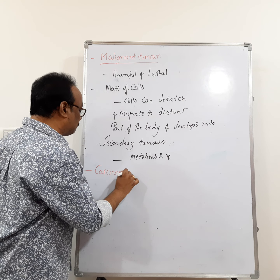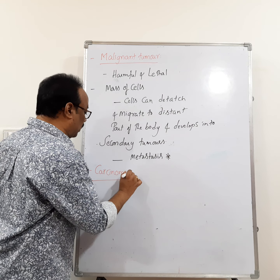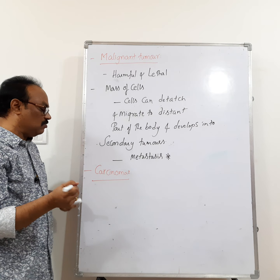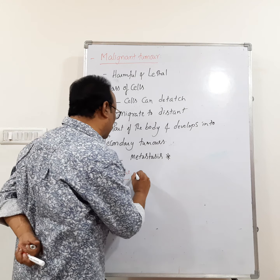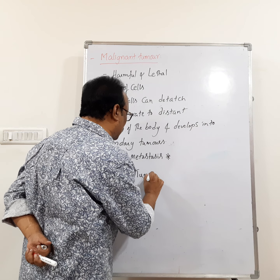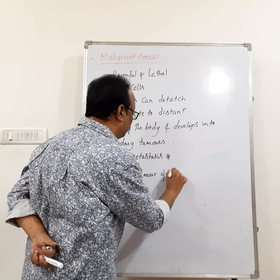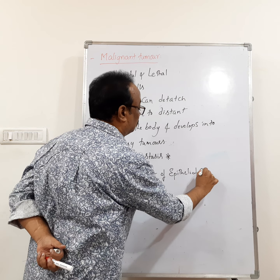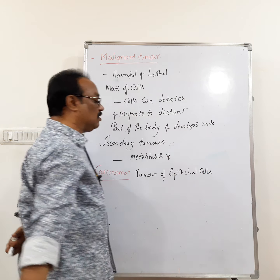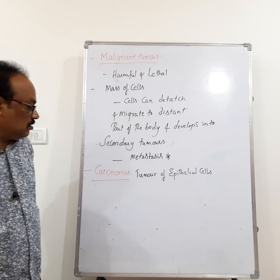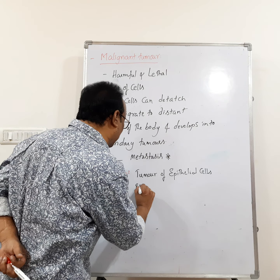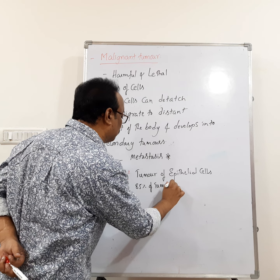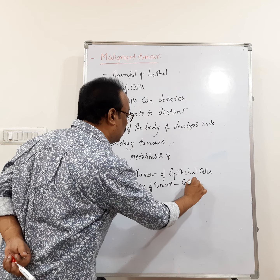The types of malignant tumors are: first, carcinoma. Carcinoma is the tumor of epithelial cells — the epithelial cells develop into tumors. 85% of tumors are carcinomas.